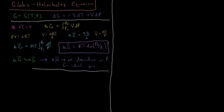Now with respect to temperature: by the form of the total differential, it's fairly straightforward to see that the partial derivative of the Gibbs energy with respect to temperature at constant pressure equals the negative of the entropy. But there's another form we want to look at — the Gibbs-Helmholtz equation — which will be very useful for examining things like the temperature dependence of equilibrium constants.